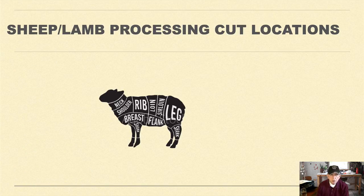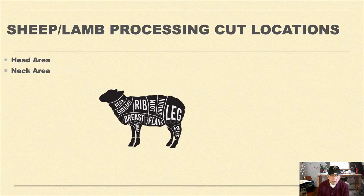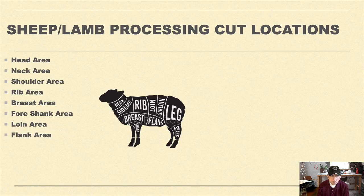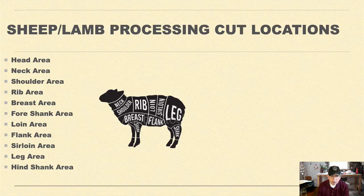This is a picture of the various areas on the lamb or sheep where the cut locations occur: head area, neck area, shoulder area, rib area, breast area, foreshank area, loin area, flank area, sirloin area, leg area, hind shank area, and the belly area.